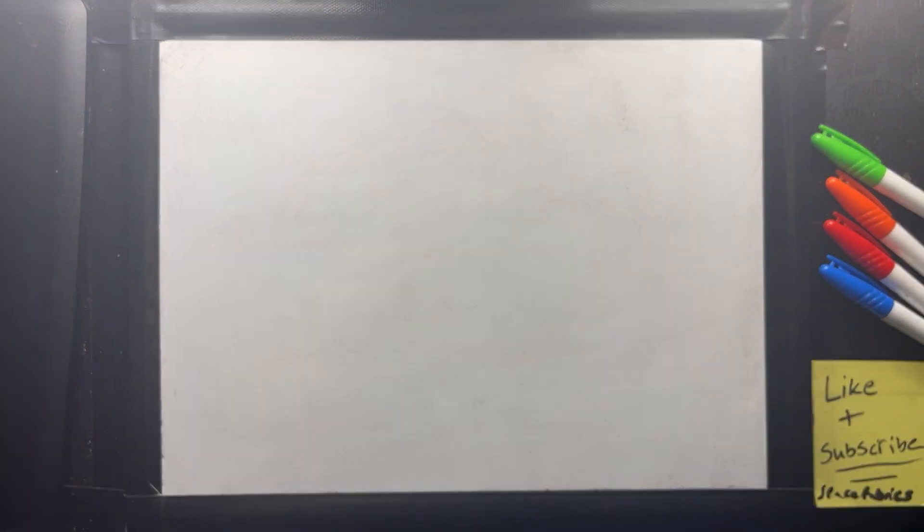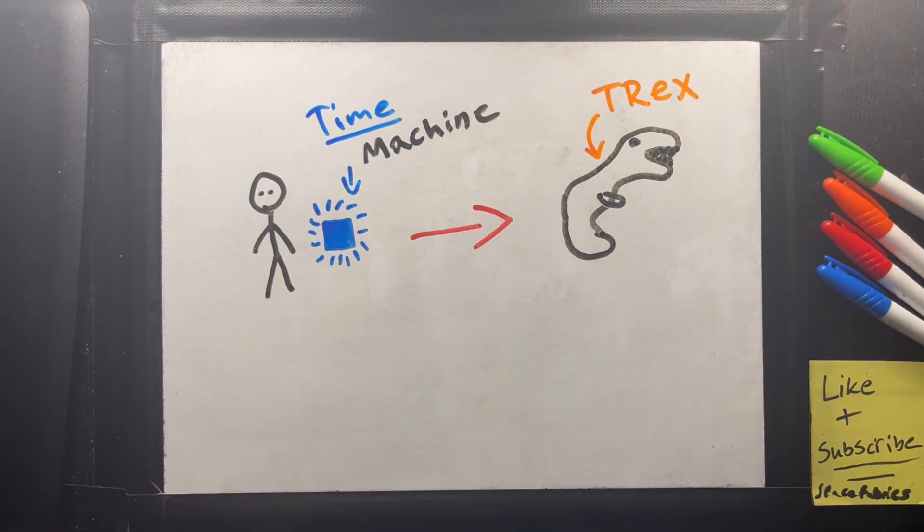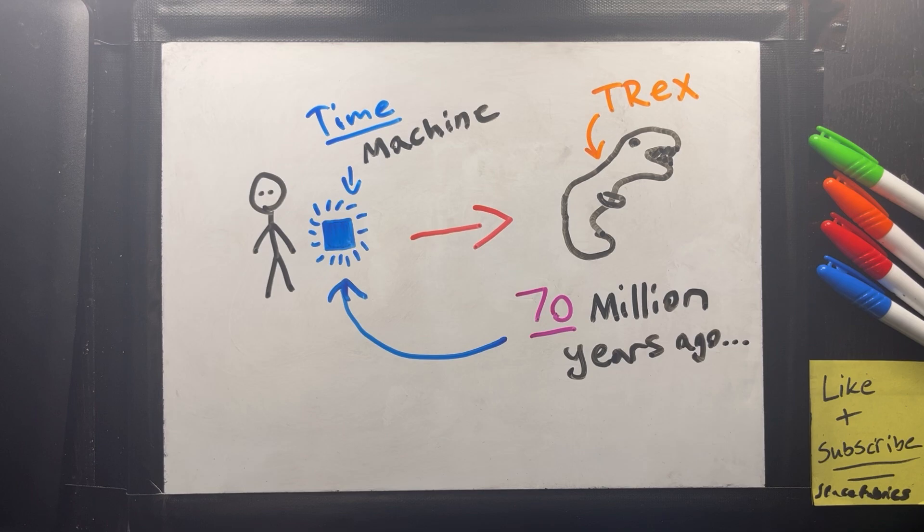I'll give you an example. Say you had a time machine and you want to go back to see some big birds like the T-Rex. Well, the T-Rex roamed the Earth about 70 million years ago. So this already sounds simple. Just set the date to 70 million years ago and start time traveling.